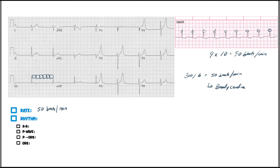We don't have enough of a rhythm strip, so it's a little bit difficult to determine, but looking at it, it does appear to be regular. If we had a rhythm strip in lead two or three it would definitely help us get more QRS complexes. We're going to go ahead and say that it is regular, though it's hard to be certain.